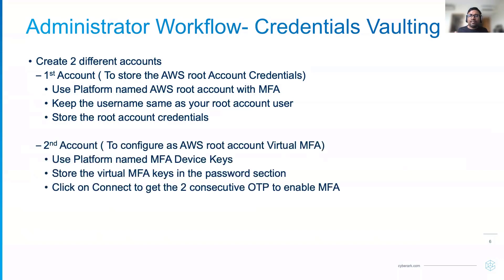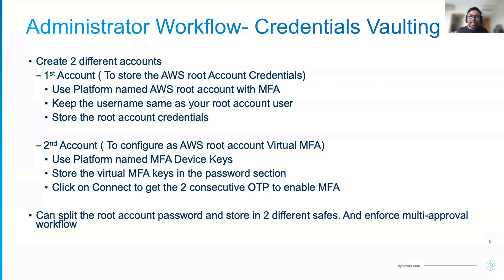The second account is where we will make CyberArk your virtual MFA. You have to copy and paste the key from AWS to CyberArk, and then you will get a OTP. You have to enter two consecutive OTPs on the AWS side to enable the virtual MFA. You might also want to split the password and store it in two different safes for an additional layer of security, and you can enforce a multi-approval workflow. This is how the entire flow looks from a credential vaulting perspective.